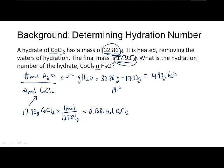14.93 grams of water times one mole over 18.02 grams, that's the molar mass of water, gives us the moles of water, which is 0.8288 moles of water. That's how many moles of water we lost.